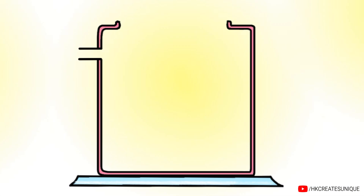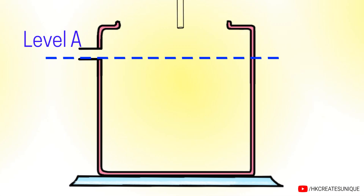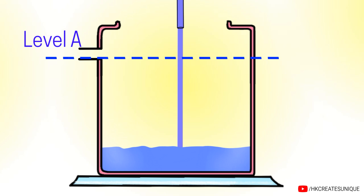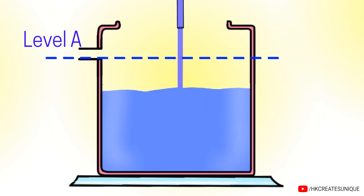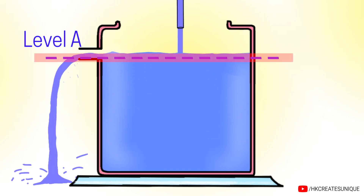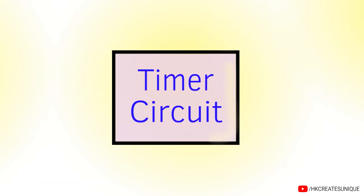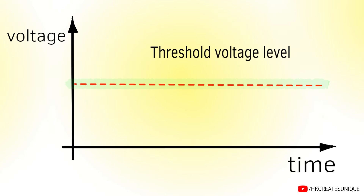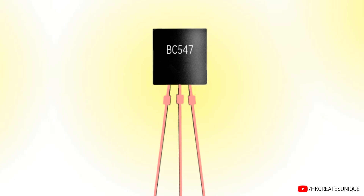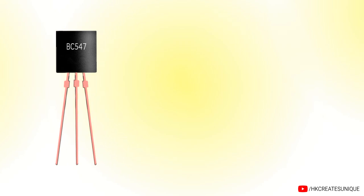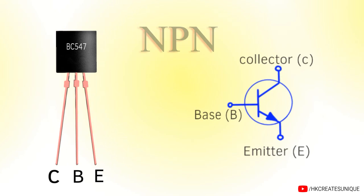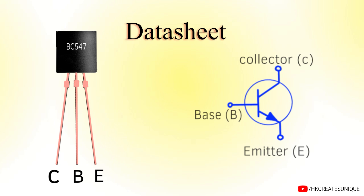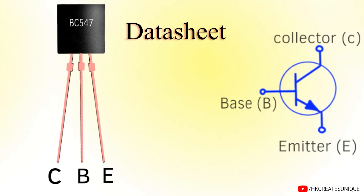In the water tank timer, as the water level reaches level A, water comes out of the pipe. This level is called the threshold level. In our circuit, we need a similar threshold voltage detector. An example of such a detector is a transistor. BC547 is a generic NPN type transistor — please check the datasheet of the transistor you use to get pinout details and other information.